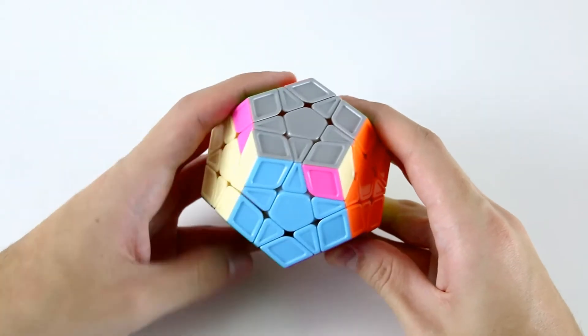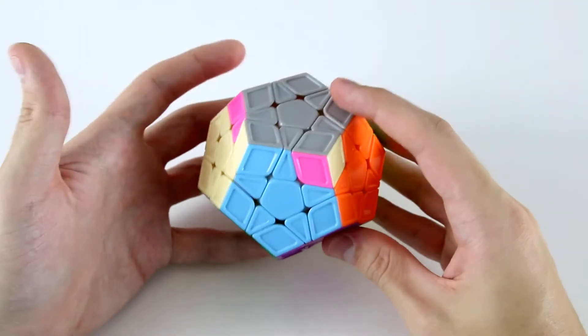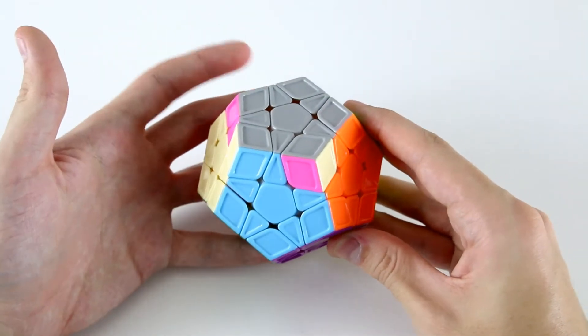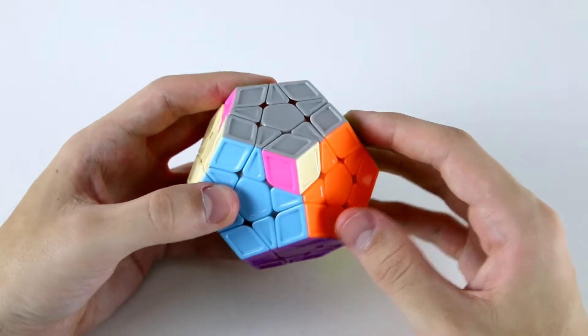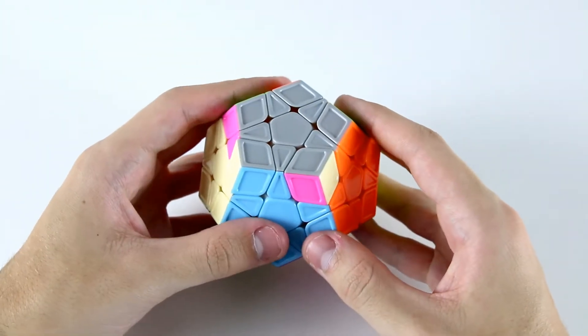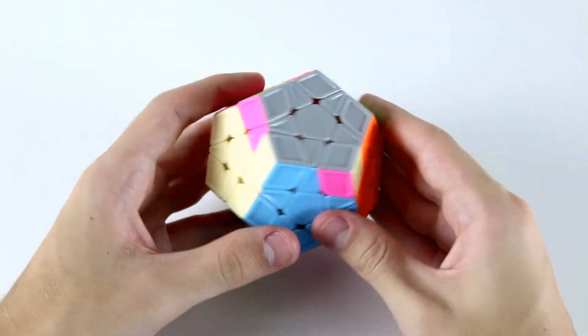When you're doing this though, it is important to be aware of the different behavior of pieces around the Megaminx last layer during PLL as opposed to on a 3x3. On a 3x3 cube, if you execute a Y permutation twice, it will bring you back to a solved state. But here, we have to execute a Y permutation three times to bring the puzzle back to a solved state.